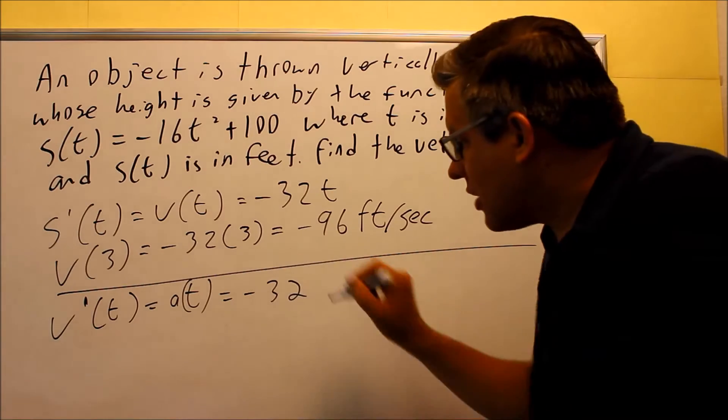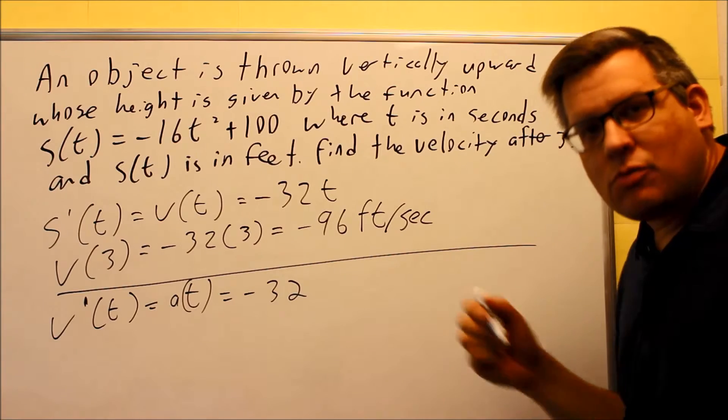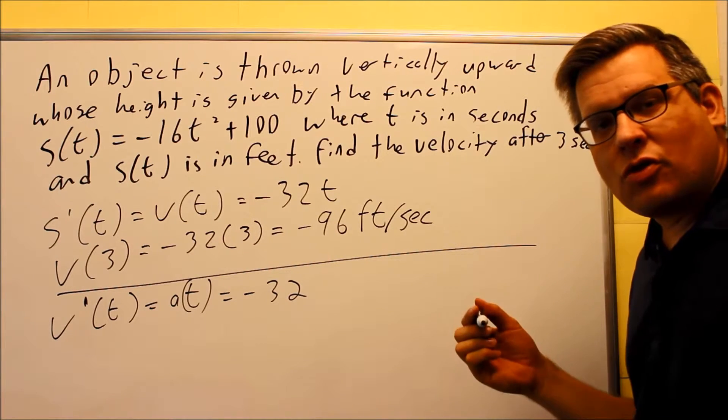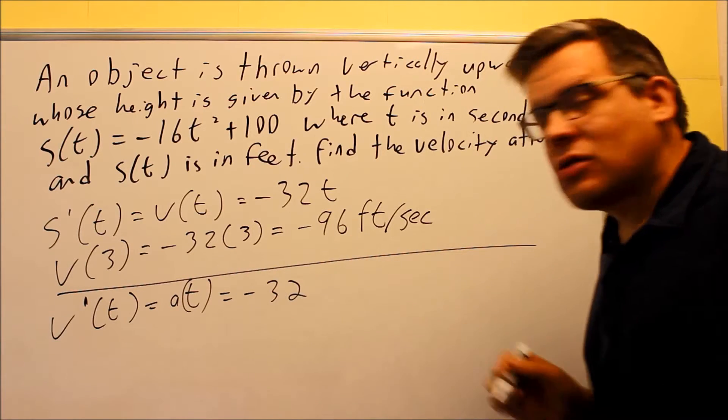So why do we get a constant? It's because we're throwing this up, and we're throwing it on the earth, we assume. And so the acceleration due to gravity on the earth is always constant. And that's actually what it is in terms of feet.